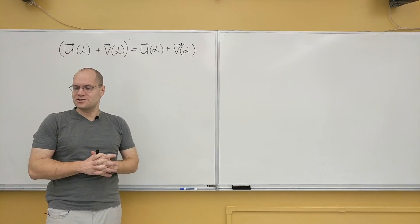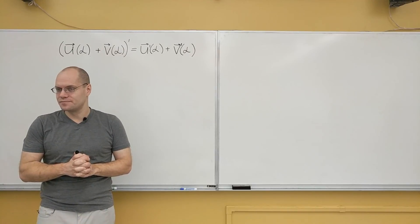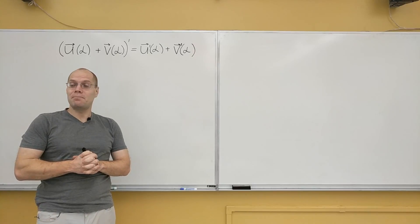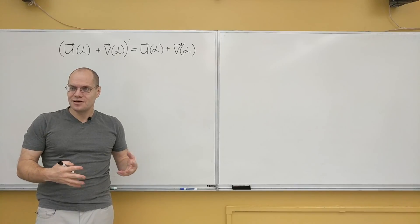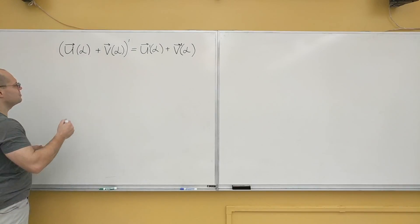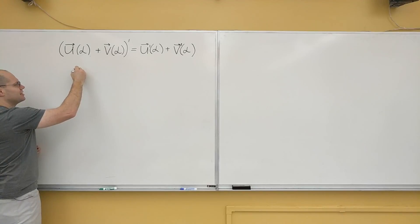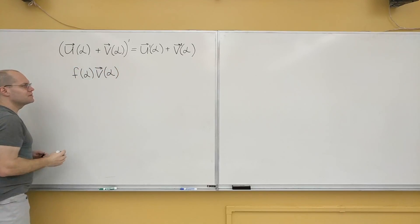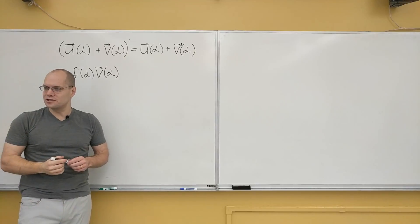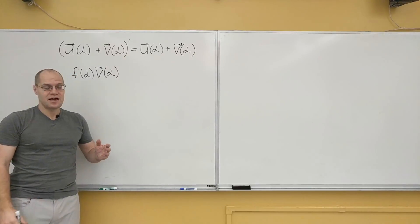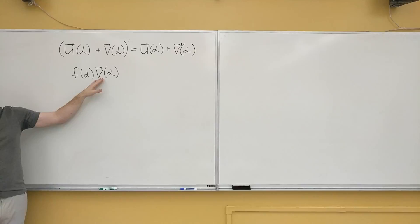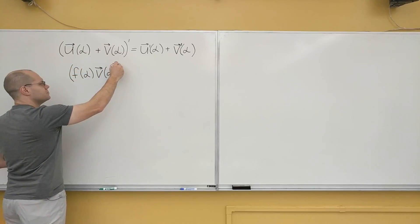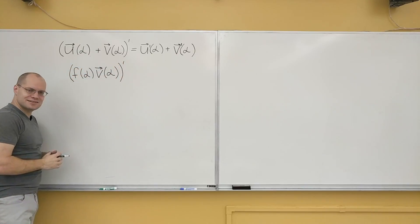There is another thing that you can do with vectors, and that's multiply them by a number — multiply them by a scalar, because it doesn't have to be a constant number, it can be a variable scalar. It's a product, and so we need a product rule for this. We actually haven't encountered a combination like this yet, but of course we will. And so for this there will be a product rule, which if you think about it is not at all obvious.